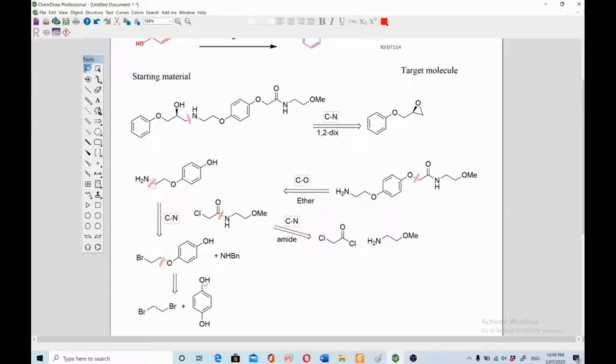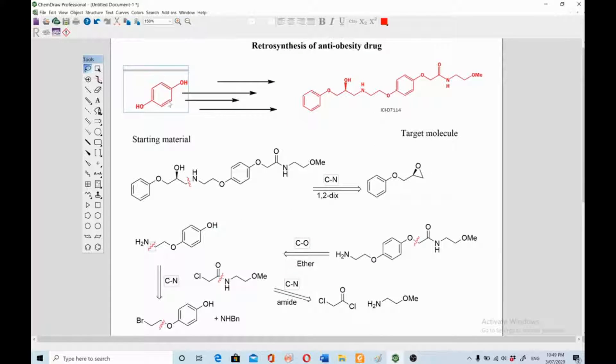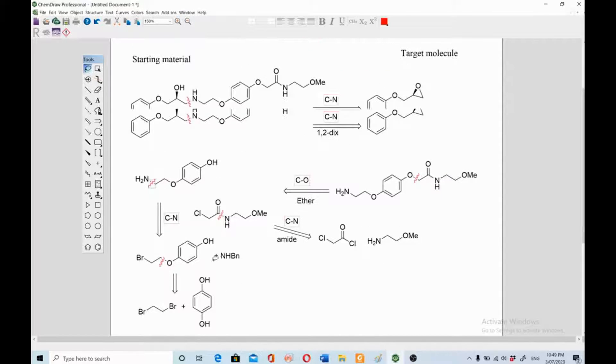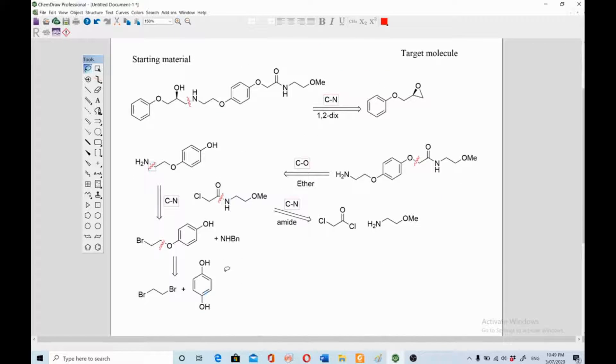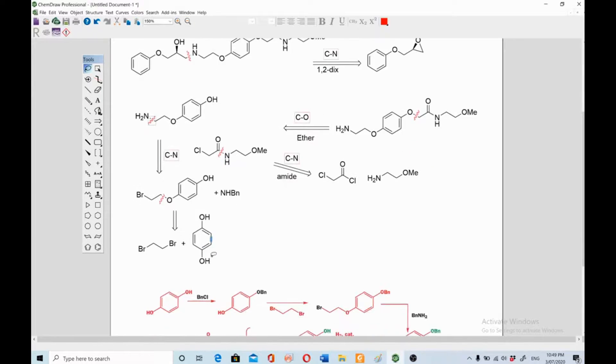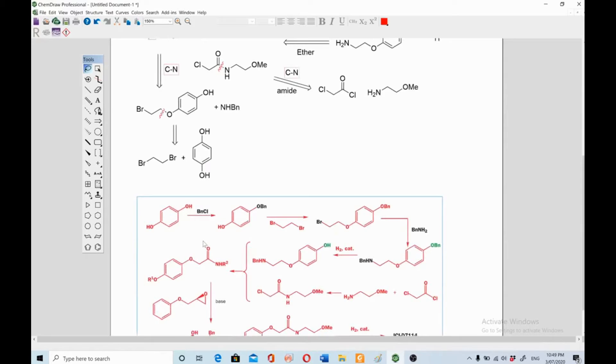This is the starting material that was in the question. So if you have to start from this compound, how will you synthesize this? This is how we did retrosynthetic analysis, and we have got to a point where we can start synthesis from these compounds. Now let's have a look at the synthesis. I have taken synthesis from the Clayden book as such.